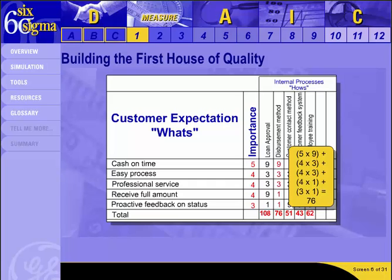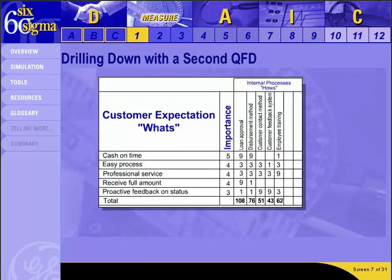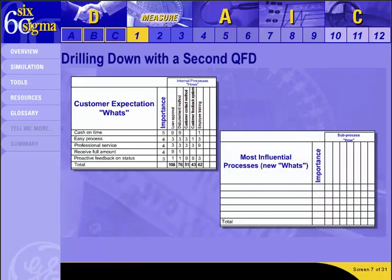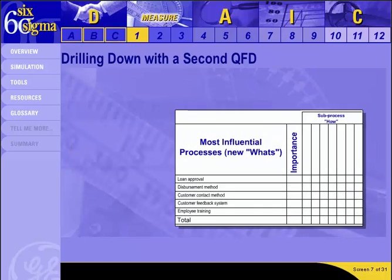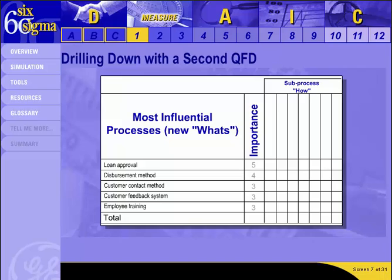Click Next to build a second house of quality. We take the highest scoring Hows from the first house and they become the Whats of a second. Since the rankings are pretty close for all the Hows in the first house, we'll include all of them in the second. The logic of moving from house to house is that those internal processes or product characteristics that have the greatest impact on customer satisfaction are more specific components of what the customer wants. Depending on the nature of your project, you might need to do 3 or 4 levels of drill down to get a manageable process or product characteristic.